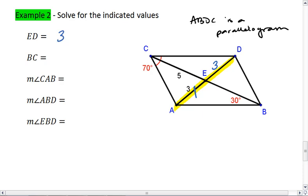I then have diagonal CB, where CE is 5, so EB is also 5, but it's asking for BC. So that entire diagonal is 5 plus 5, which is 10.